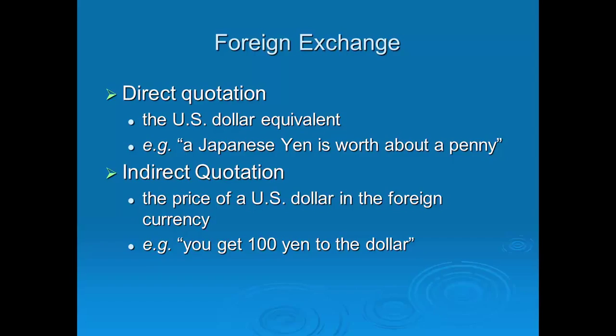The other type is an indirect quote — the price of a US dollar in the foreign currency. For one US dollar, how many units of the foreign currency do you get? Typically, the Japanese yen is quoted in indirect terms: 100 yen to the dollar. To move from an indirect quote to a direct quote is simple — the direct quote equals one over the indirect quote. For the yen: one dollar gets you 100 yen, so one yen costs one divided by 100, or one cent.